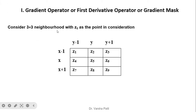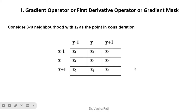We consider a 3x3 neighborhood area with z5 as the point in consideration. Z1 to Z9 are the gray level values. Since the image is a two-dimensional function, it spans across x and y directions. To find the gradient, we need to take the difference both horizontally and vertically.